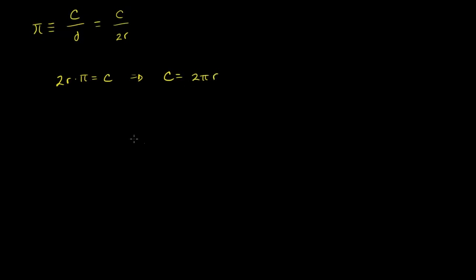More familiarly, circumference is equal to 2 pi r. This is one of those fundamental things that you learn early on in your career, and you use it to find circumferences usually, or figure out radii if you know the circumference.